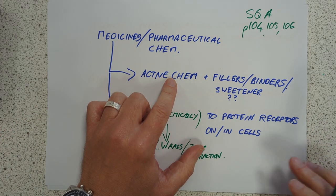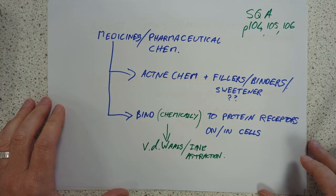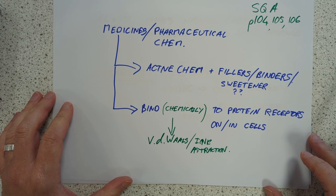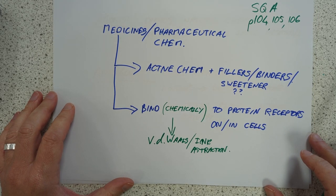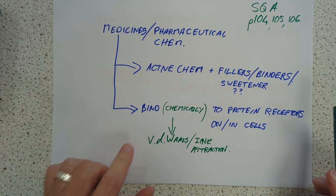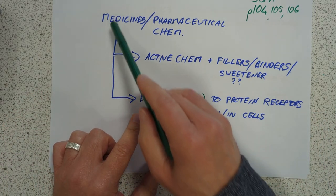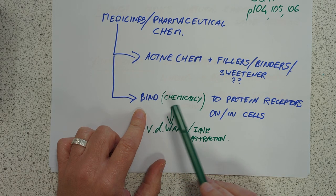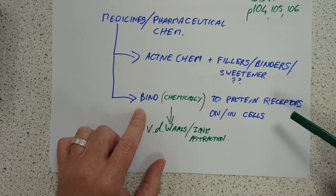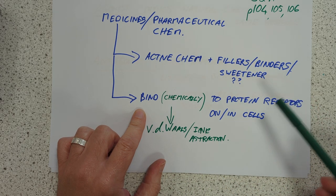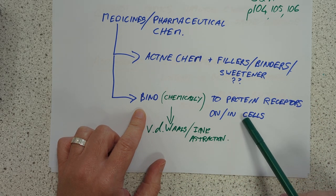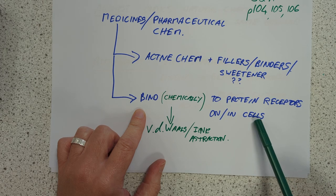Traditionally, an aspirin, for example, is 300 milligrams in a tablet. A paracetamol is 500 milligrams for a standard tablet. So, what do medicines do?